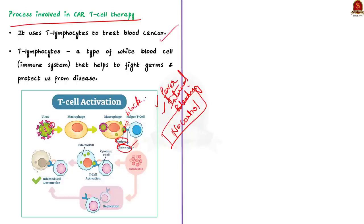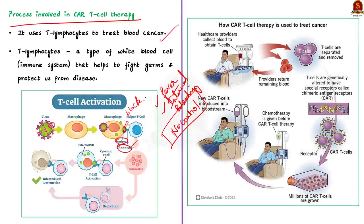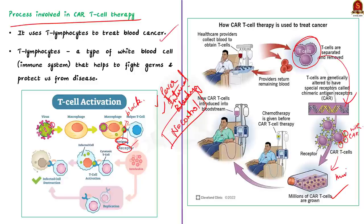In CAR T-cell therapy, blood is collected from a blood cancer patient, and T-cells are separated and removed. The obtained T-cells are then genetically altered so they have specific receptors called Chimeric Antigen Receptors (CAR), making them CAR T-cells able to attack and kill cancerous cells. These CAR T-cells are kept under conditions that enable them to multiply into millions of cells. These numerous CAR T-cells are then introduced into the bloodstream of the patient, where they fight off and help cure the cancerous cells.